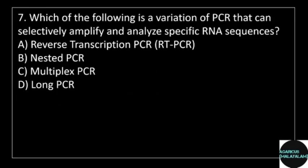7th question. Which of the following is a variation of PCR that can selectively amplify and analyze specific RNA sequences? Answer options. Option A: Reverse transcription PCR. Option B: Nested PCR.